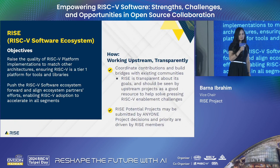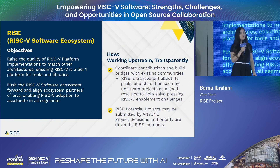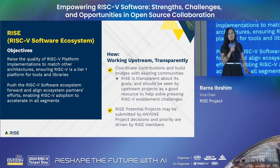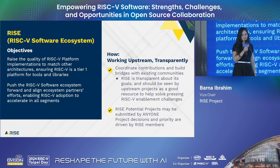First, we want to raise the quality of RISC-V platform implementations and make it a tier-one platform like other ISAs. Second, we want to make sure RISC-V has the best languages, runtimes, libraries, and compilers ready. Third, we don't want to duplicate efforts — we want to align and go forward together. RISE is achieving this in three ways: coordinating with partners, working closely with open source projects, and helping all of these open source projects get ready for RISC-V software readiness.